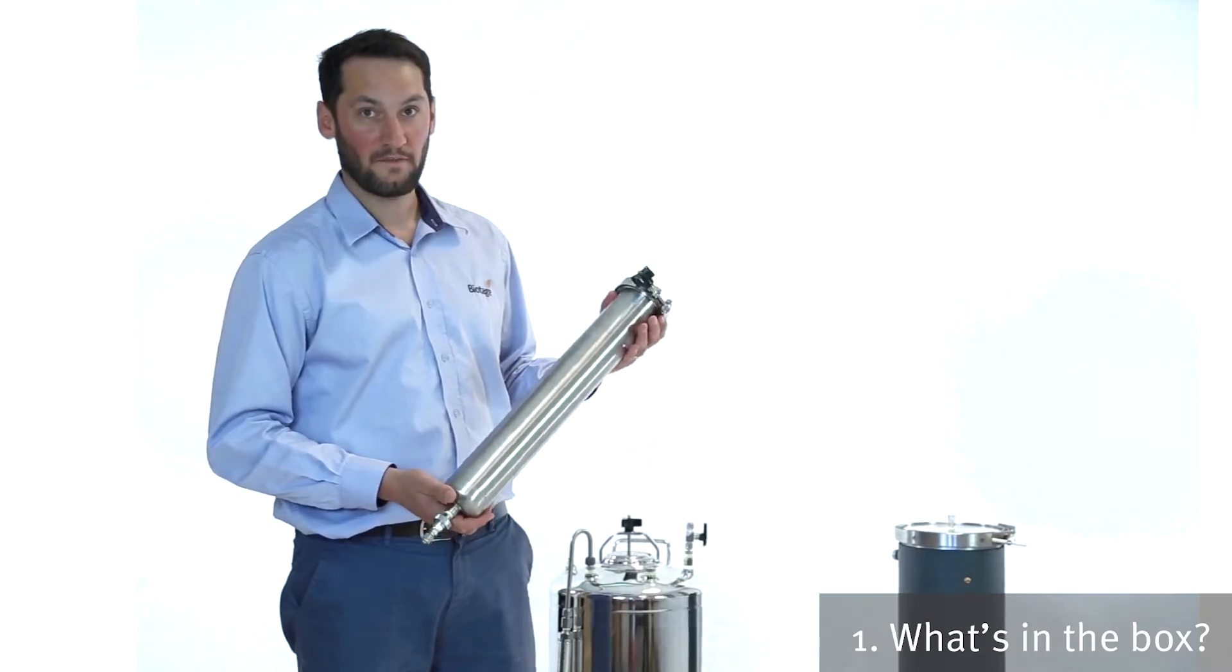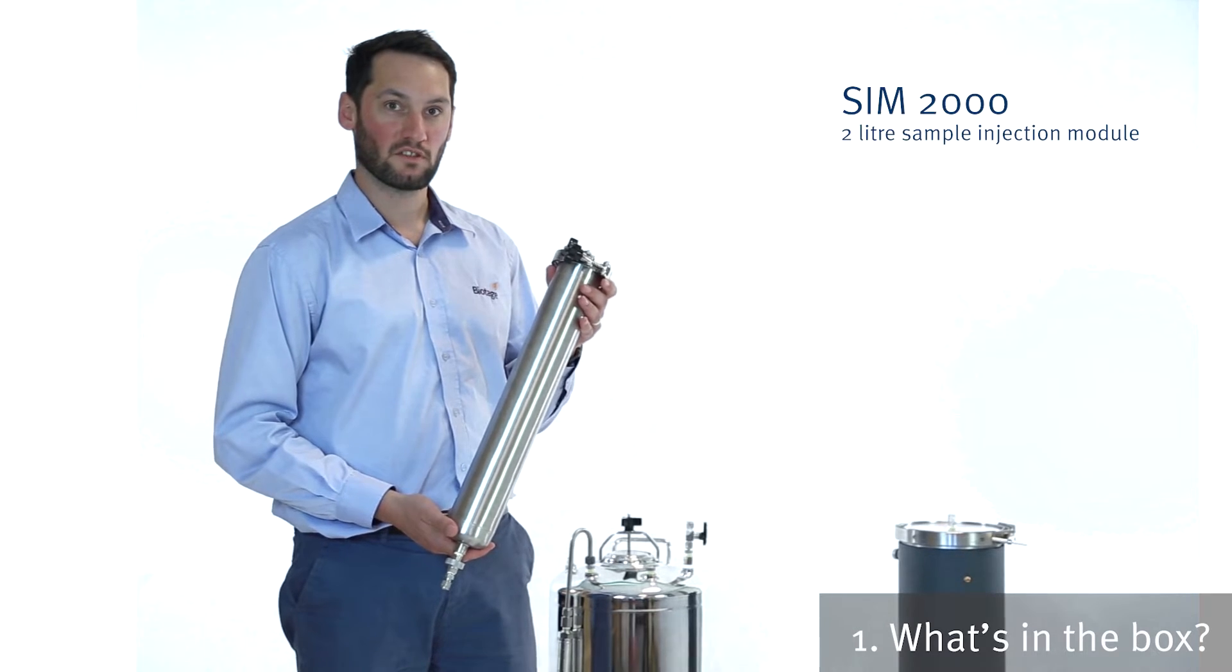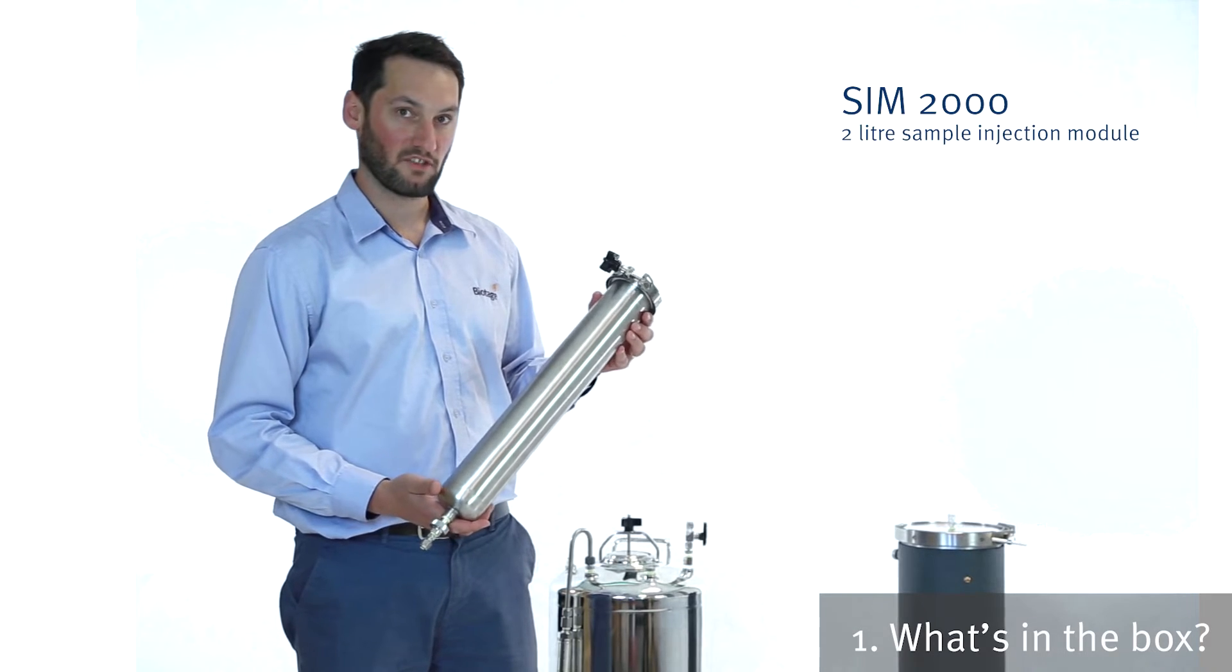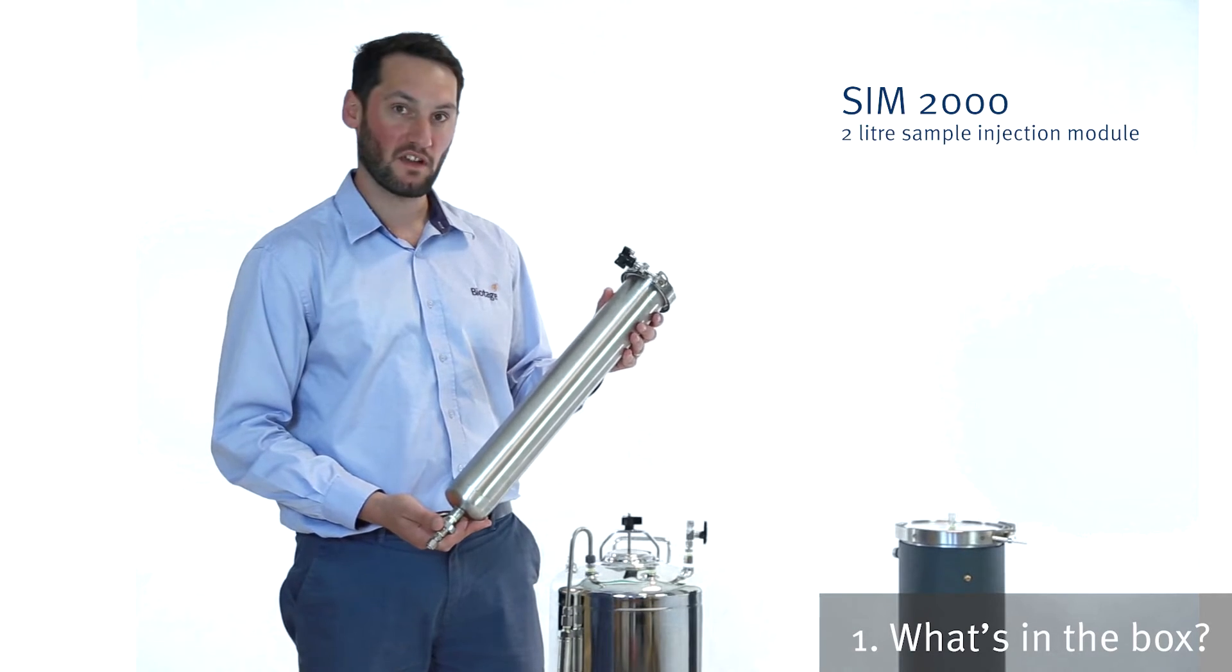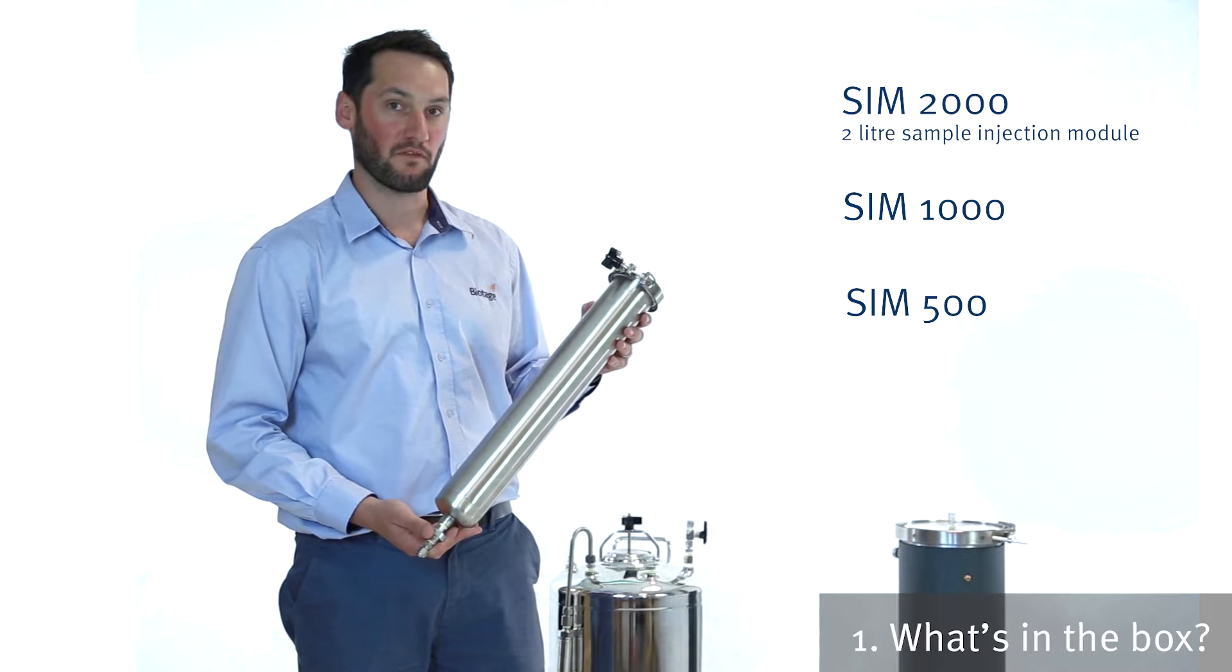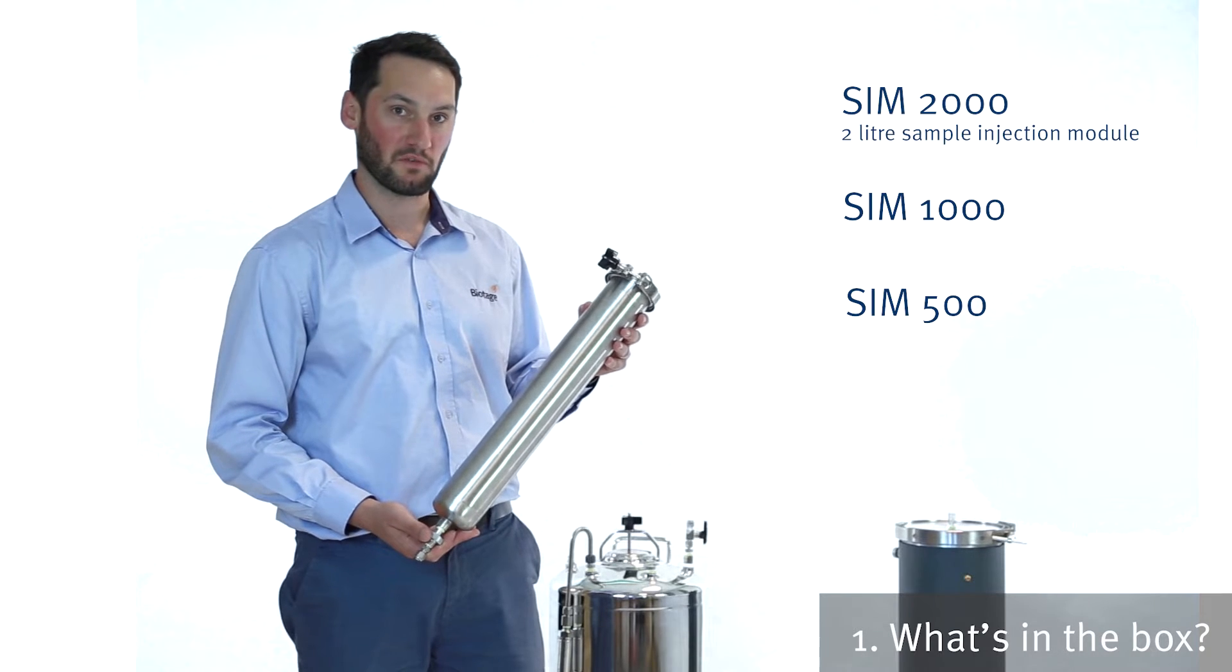So the Flash 150 comes with the SIM2000. That's a 2 liter sample injection module. You've got a smaller size, the 1000, and you've also got a 500. So that's a liter and 500 mils, two other sizes.